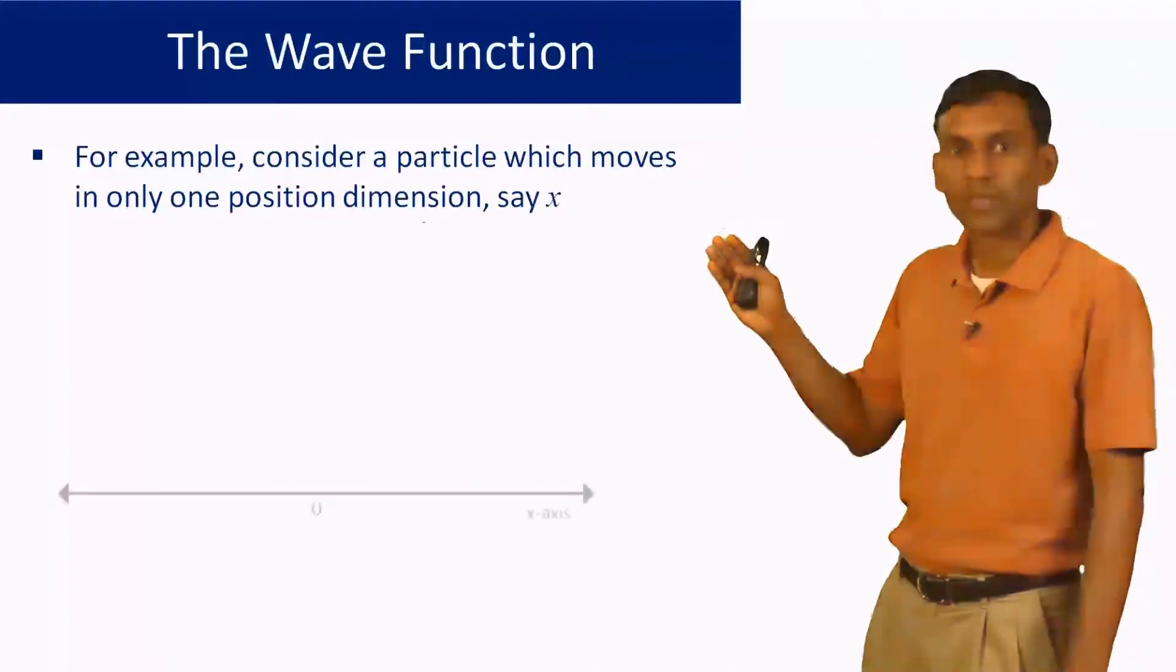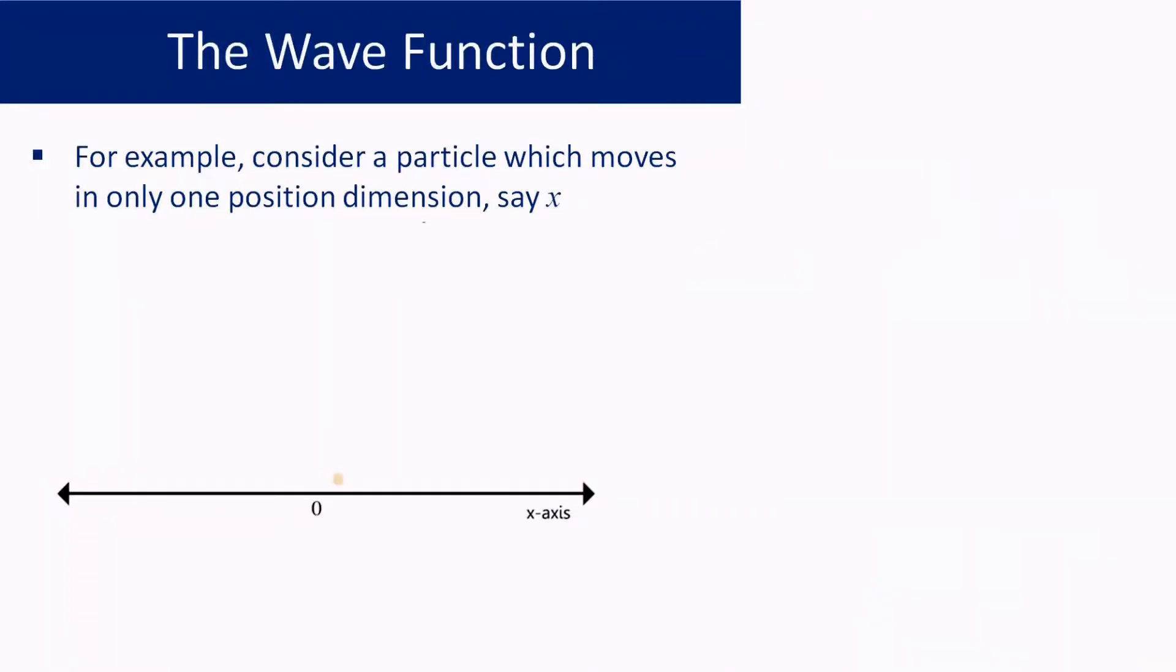For example, consider a particle which moves in only one spatial dimension. We have simplified our situation further, so you have just one particle moving in one spatial dimension. And let us say that ψ in this case, which is a function of x and t, has this particular form. Then ψ*ψ, which is this probability density, looks like this.